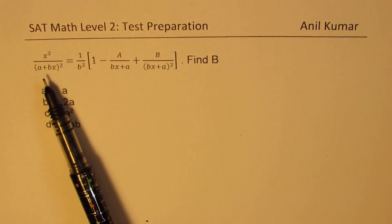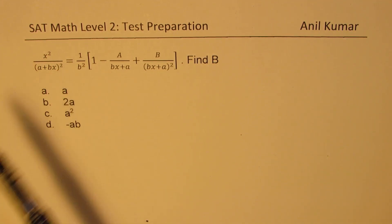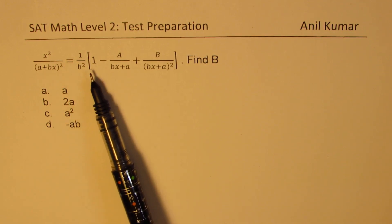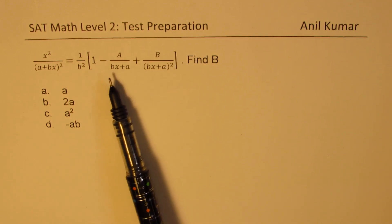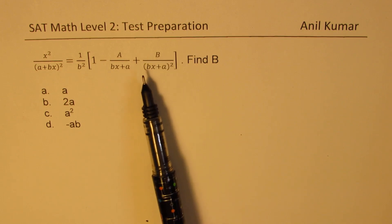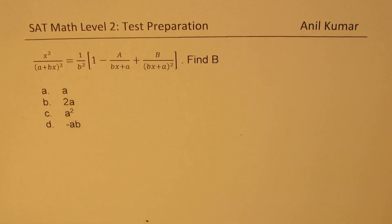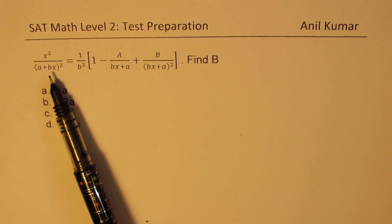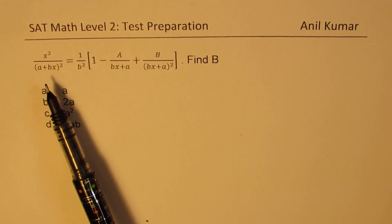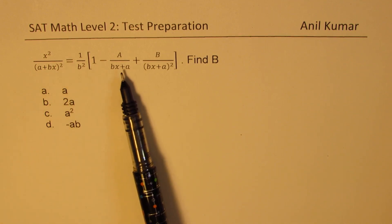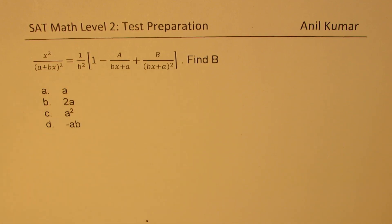x squared over (a plus bx) whole squared is equal to 1 over b squared, within brackets: 1 minus a over (bx plus a), plus b over (bx plus a) whole squared. So when you have a linear repeated factor, you can always break it up like shown here.